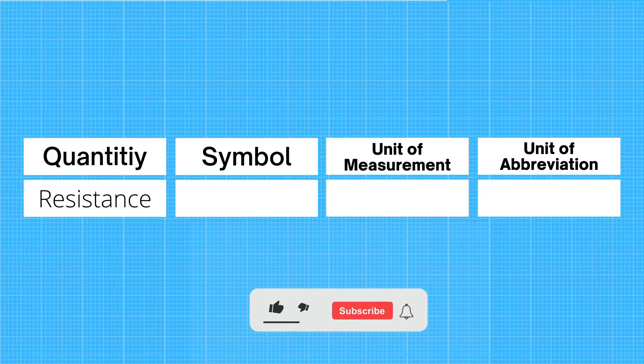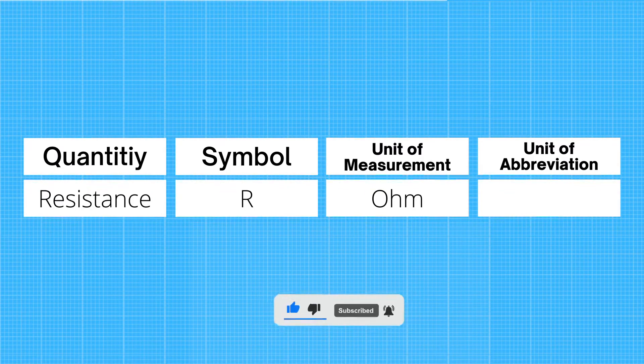The symbol we use for resistance is R. The unit of measure is Ohm, and the unit abbreviation is the Greek sign Omega.